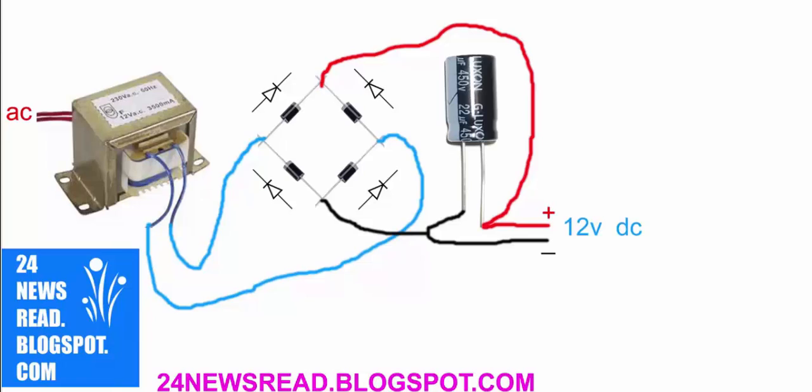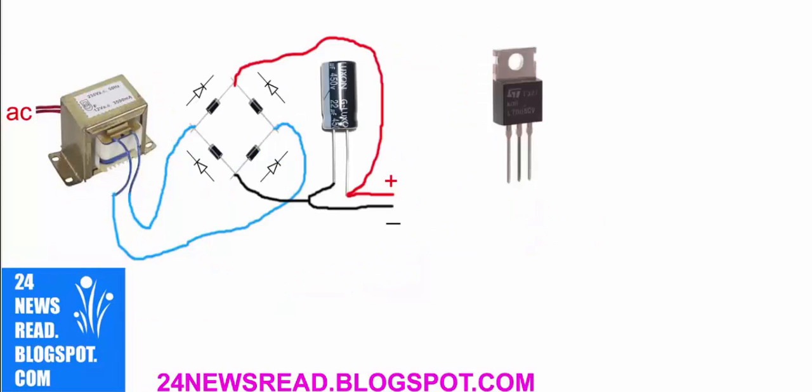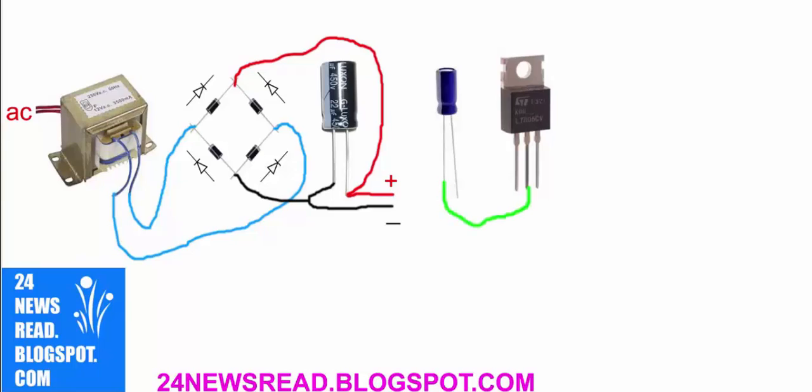Now we need an IC, one mini-capacitor. Join minus position, now join plus position. Other mini-capacitor, join plus position and join minus position.